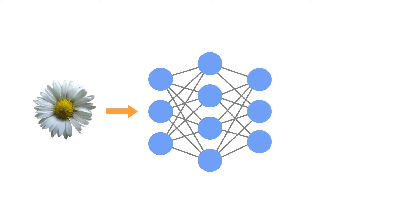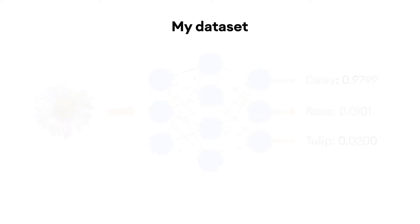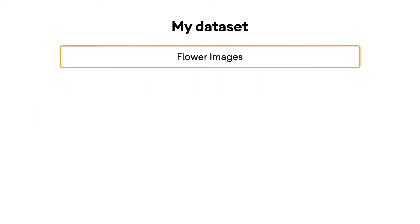So if you feed it a daisy, you'll get back a set of predictions for that flower. The output of the neural network will be a number of values based on the classes that the model is trained for. For example, here I have three outputs for the probability of a daisy, a rose, or a tulip. So how would you build a model like this?